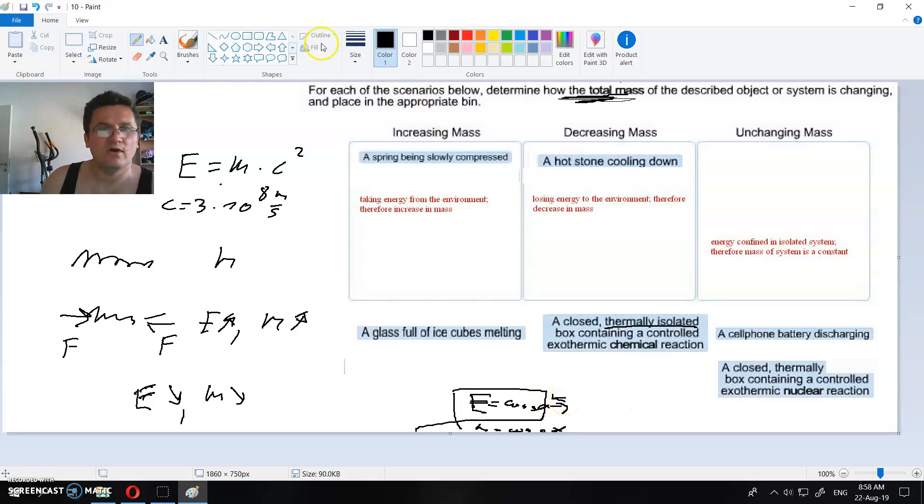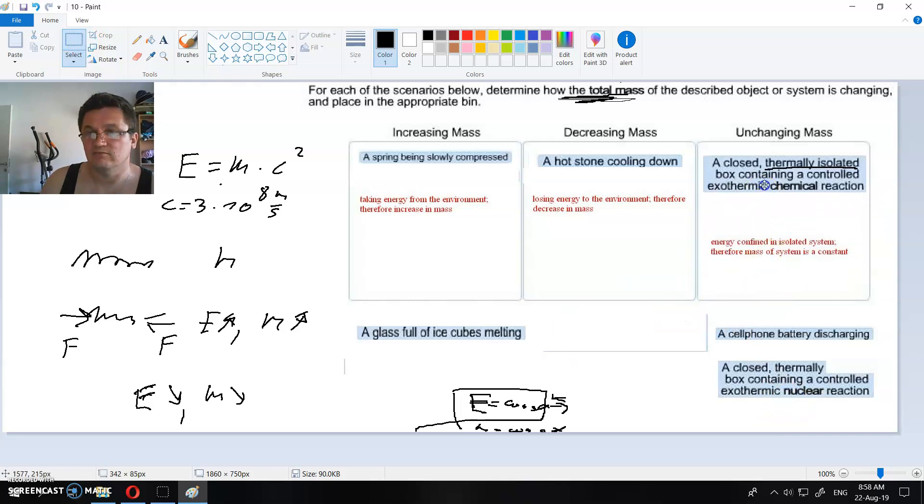Thermally isolated box, that means mass is constant also. That means it doesn't change. Unchanged mass. So we will take this situation here and place it in this box here. Now you have three more.